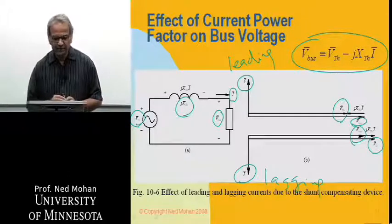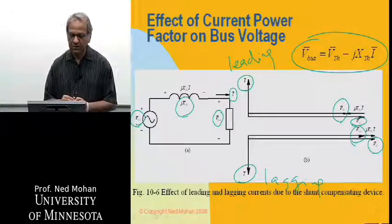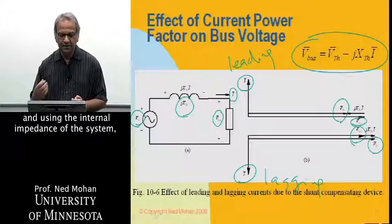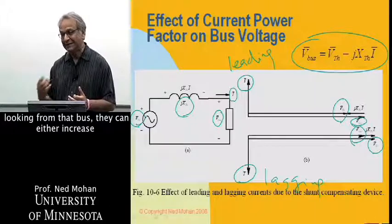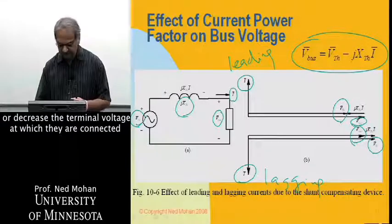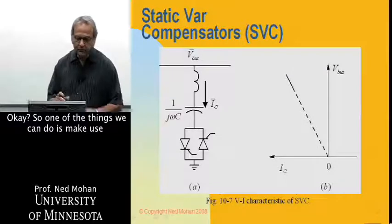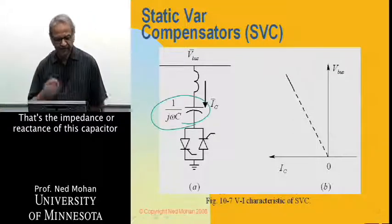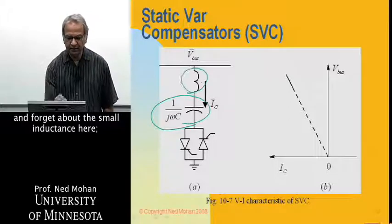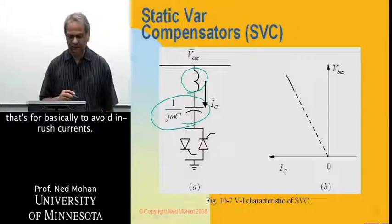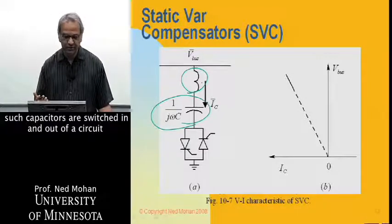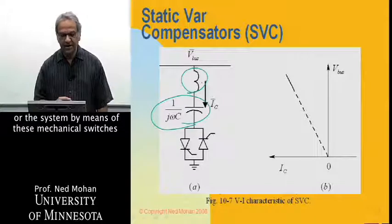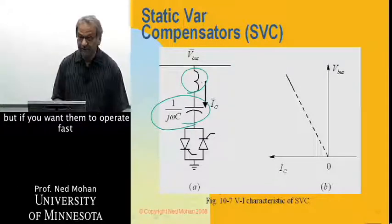That's the principle on which these static reactive power compensation devices work. They either draw a leading power factor current or a lagging power factor current, and using the internal impedance of the system looking from that bus, they can either increase or decrease the terminal voltage at which they are connected. One thing we can do is make use of capacitors — that's the reactance of the capacitor — with a small inductance to avoid inrush currents. We can use a mechanical switch to switch capacitors in and out of the system.